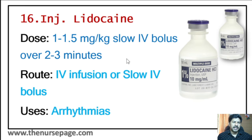Twenty-first injection is 3% sodium chloride. Dose is 0.5 to 1 milli-equivalent per liter per hour. Route of administration is IV infusion. Mainly used in hyponatremia. It should be infused very slowly, otherwise it can cause demyelinating changes in the brain.